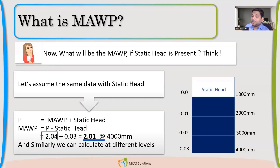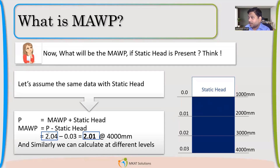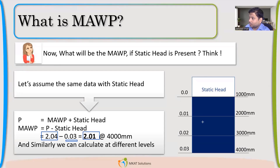Why is that MAWP changing? Why did the maximum pressure-taking capability reduce because of static head? The maximum pressure-taking capability was 2.04 MPa — until now it was connected to thickness. Once we add static head, the static head is also influencing it, and the maximum pressure-taking capability of the vessel reduces to 2.01 MPa.